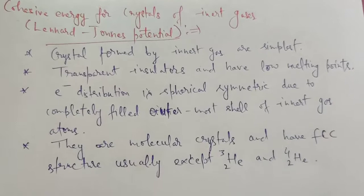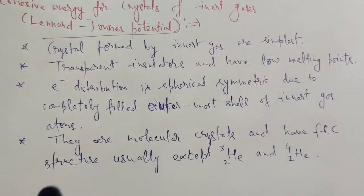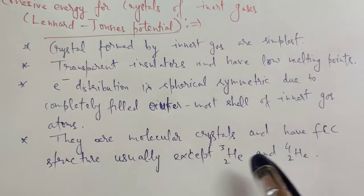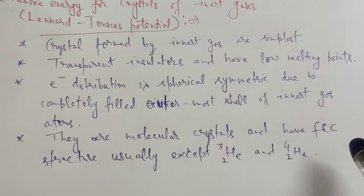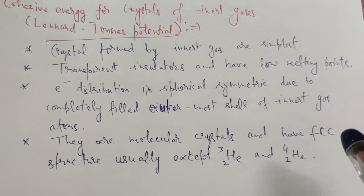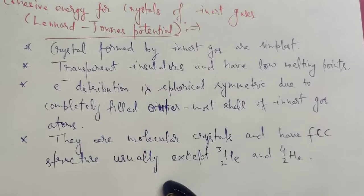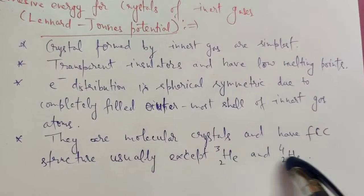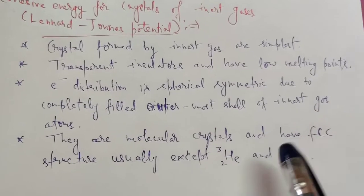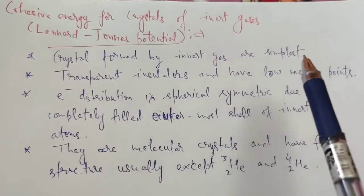Inert gas crystals have FCC structures usually, except for helium-3 and helium-4, which do not solidify at zero pressure and at absolute zero temperature. This is due to zero-point motion, which arises from quantum mechanics. For heavier atoms, these quantum effects are negligible.